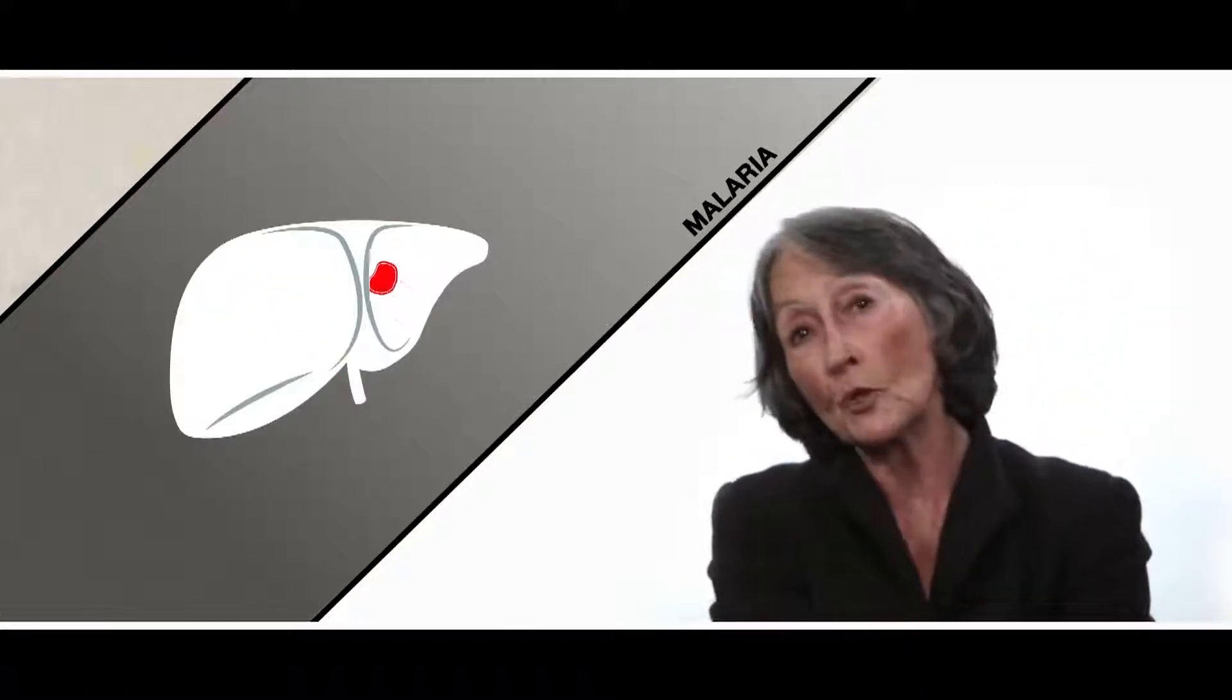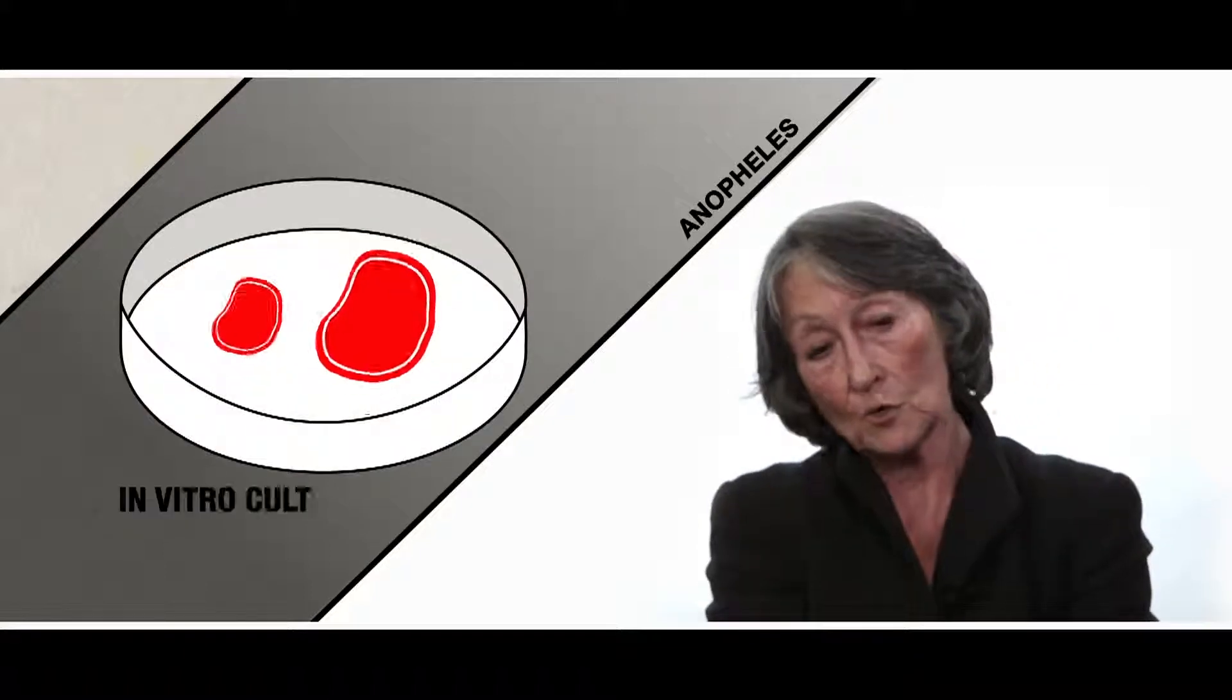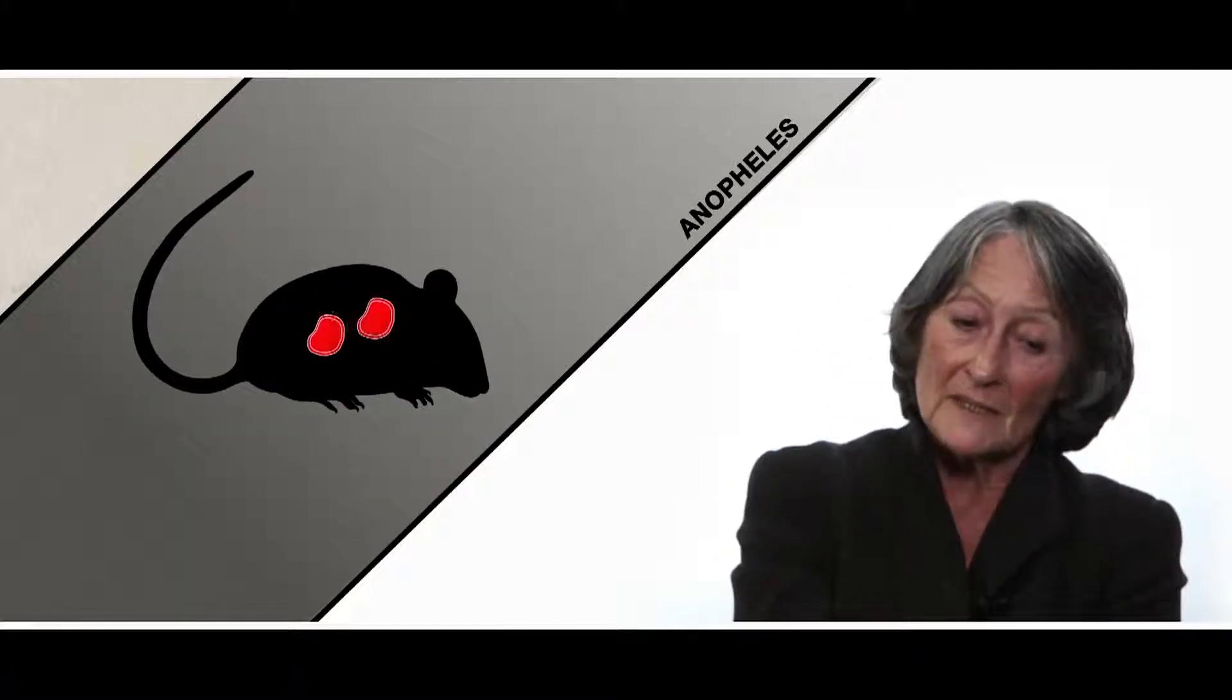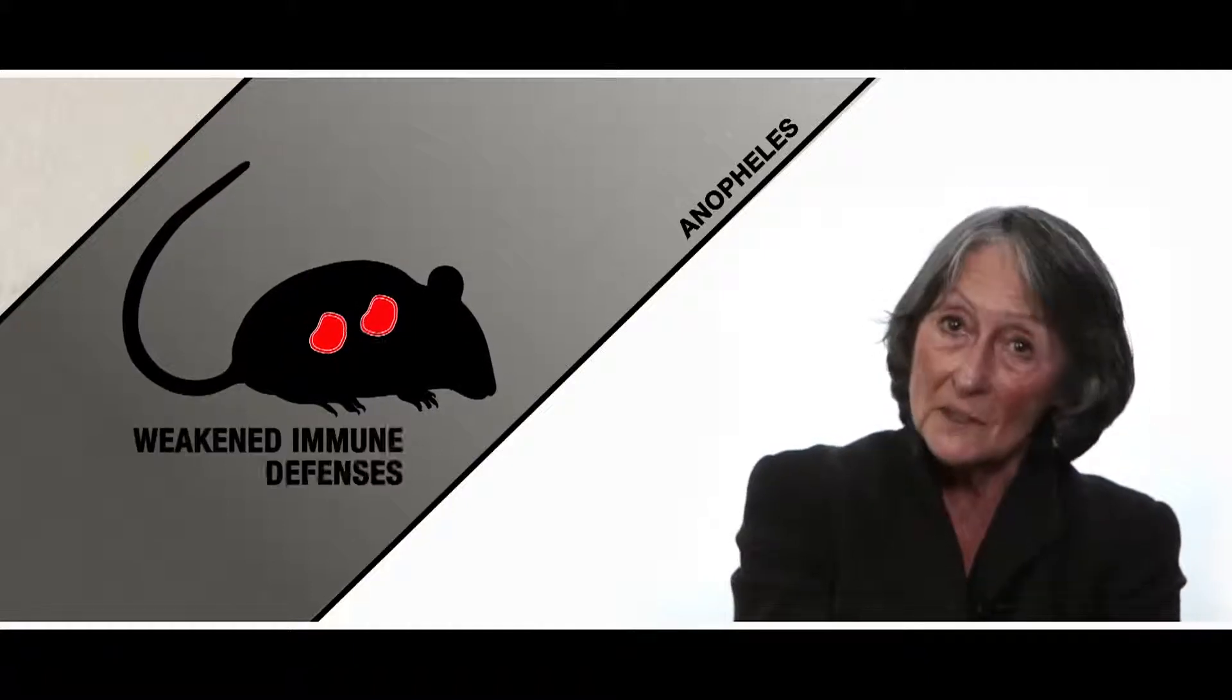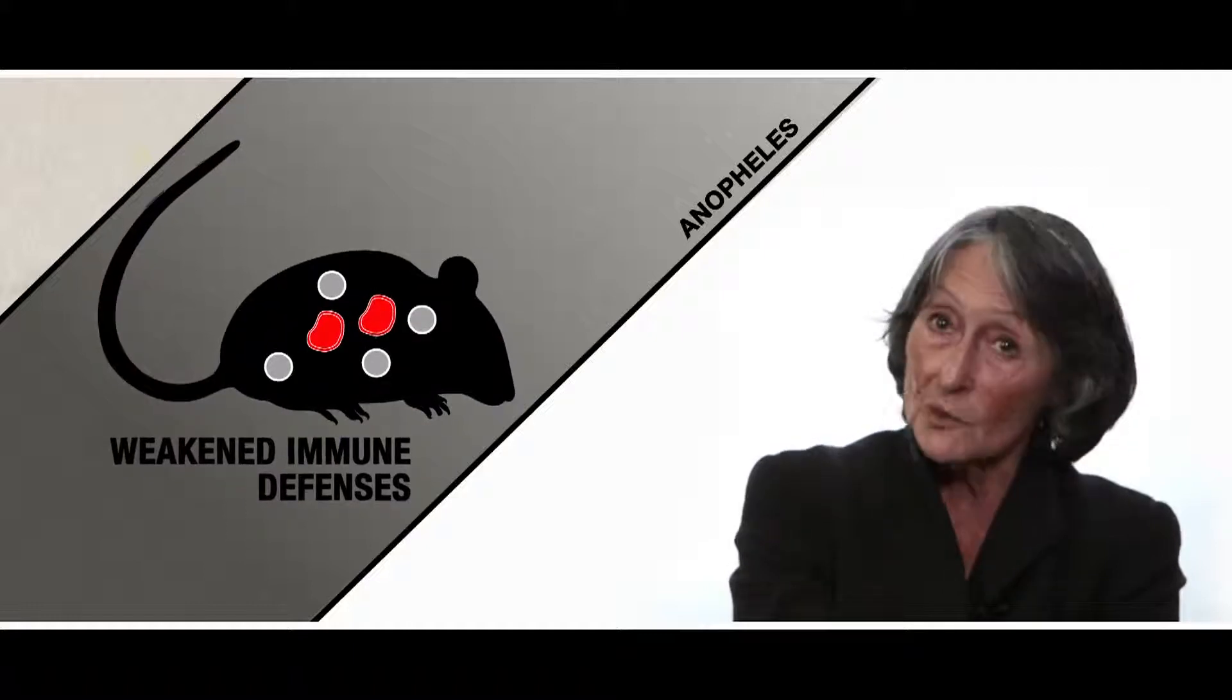To conduct this type of research, we work with an insectarium where we breed female anopheles, because it's only the female anopheles that transmit malaria. We extract the parasites from the salivary glands of these anopheles, and we use them to infect either in vitro cultures that mimic the liver, or to infect what we call humanized mice. Mice that are severely immunodepressed, and into which we are able to transplant human cells.